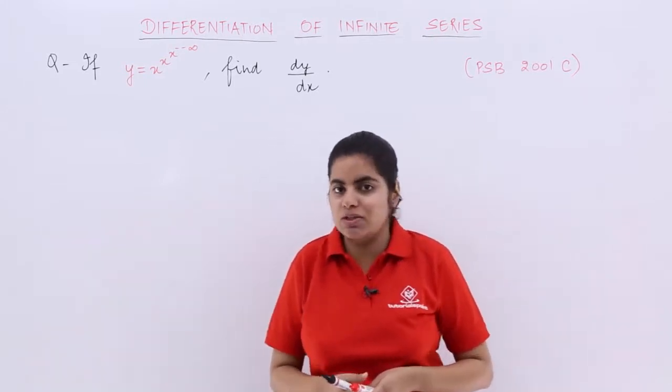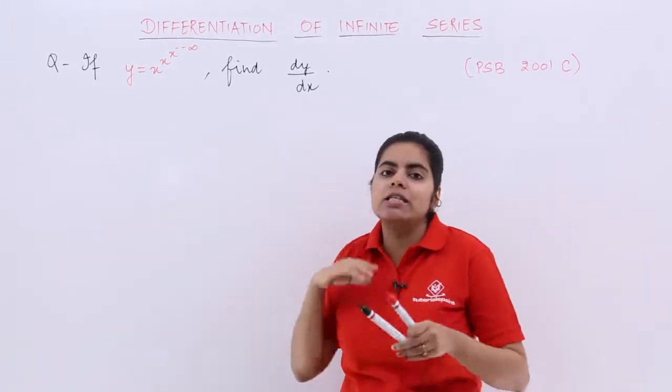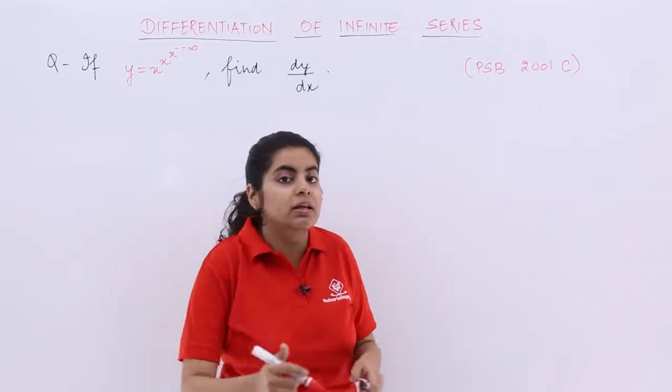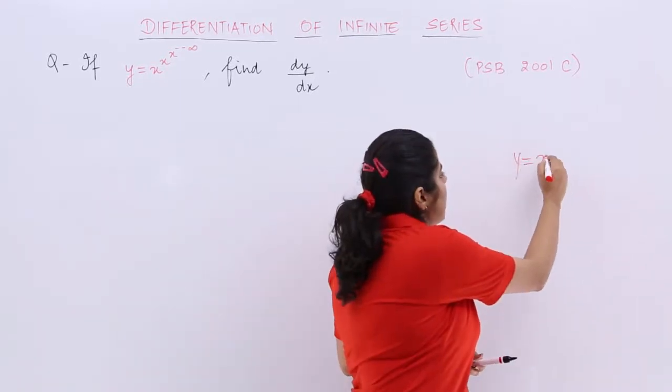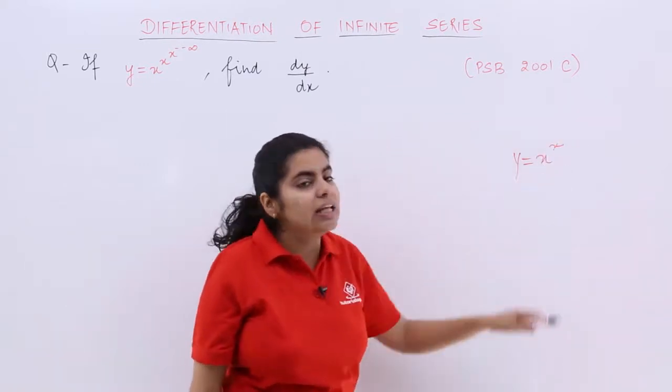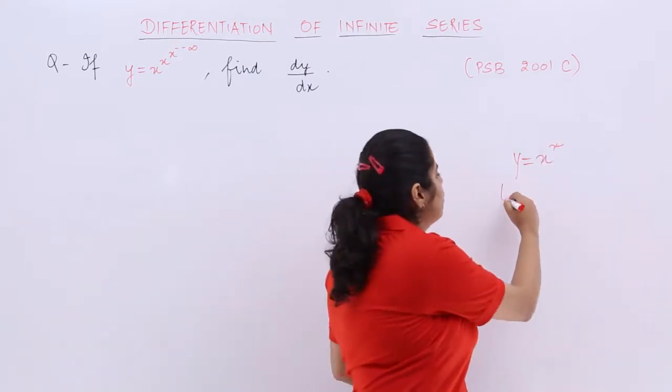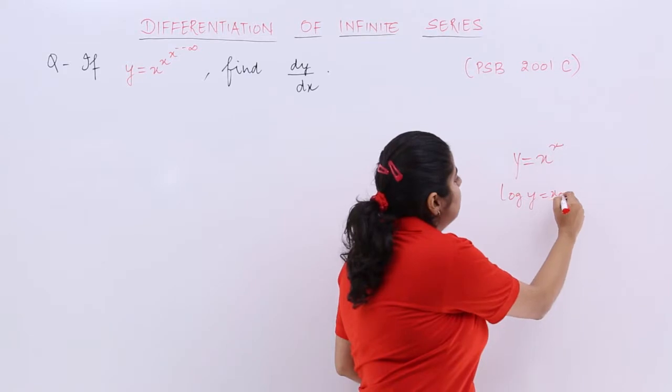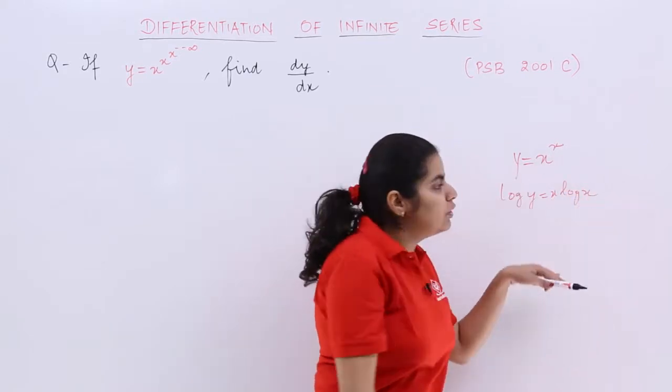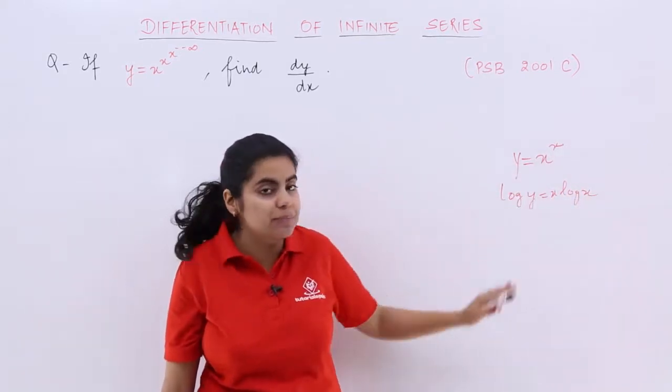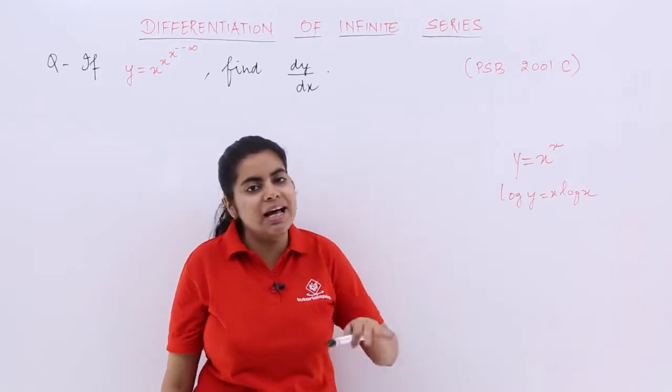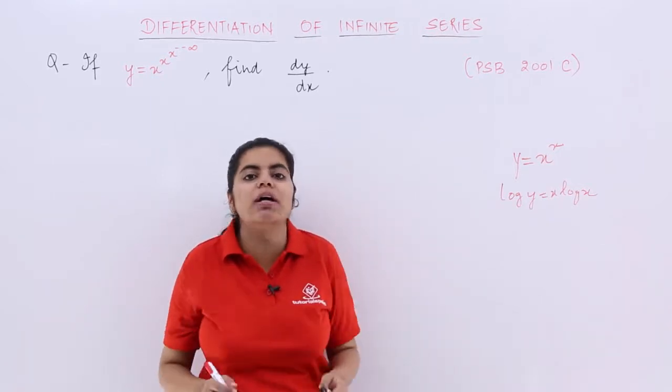Now you see this question. This question is not x raised to the power x. Had y been x raised to the power x, easily we would have solved it. How? We would have taken log y is equal to x log x and then differentiating these terms and we would have got the answer as we have seen in the previous topic of logarithmic differentiation.